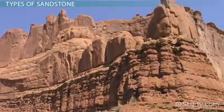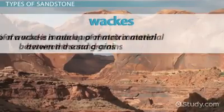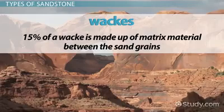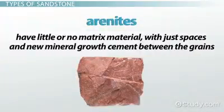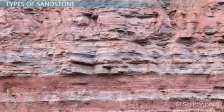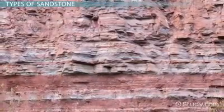Sandstone can be broken down into two major groups: arenites and wackes. At least 15% of a wacke is made up of matrix material between the sand grains. Arenites have little or no matrix material, with just spaces and new mineral growth cement between the grains. Each group of sandstone can be described in more detail, depending on the minerals found within the rock.